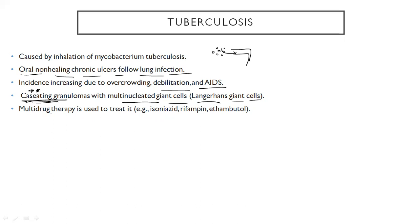Caseating necrosis is a very common feature of TB. The multiple drug therapy used to treat it is isoniazid, rifampin, and ethambutol. There are three types of tuberculosis: primary, secondary, and miliary.